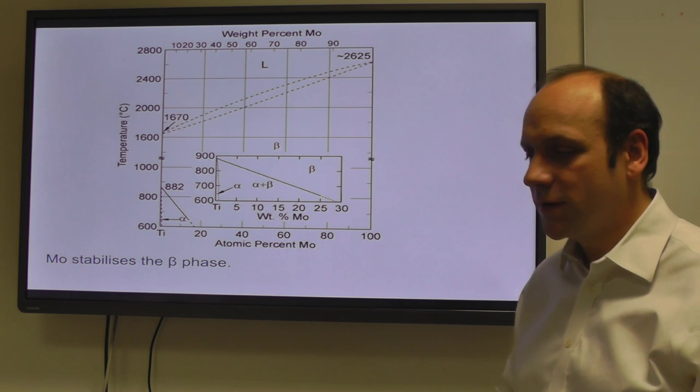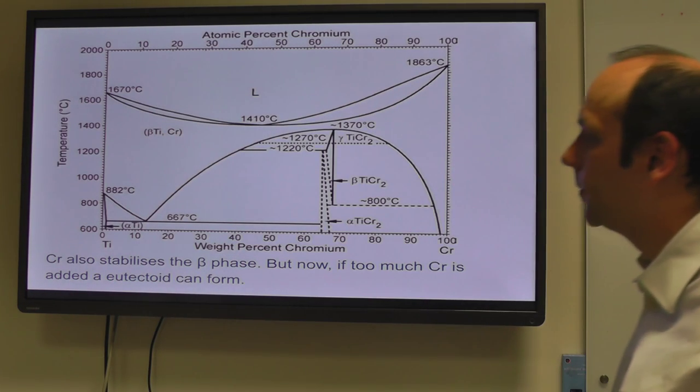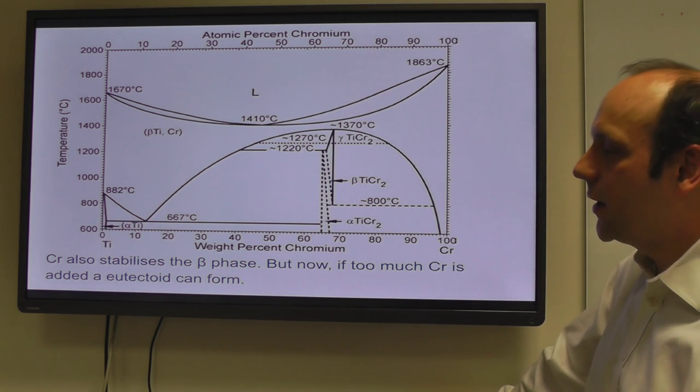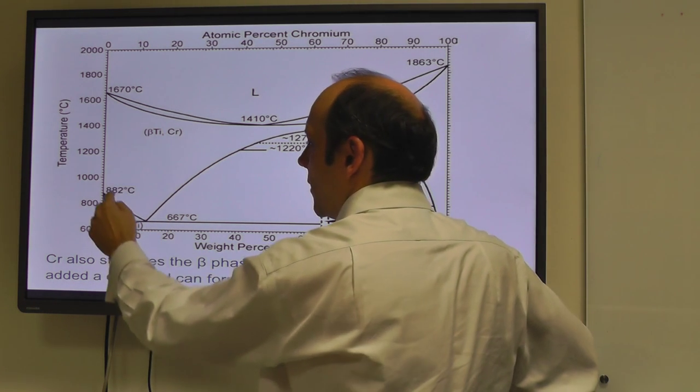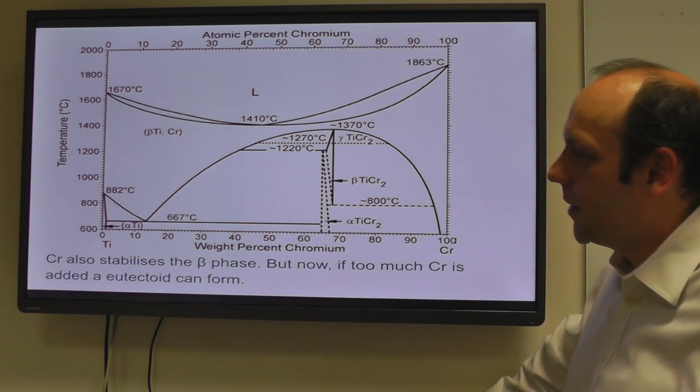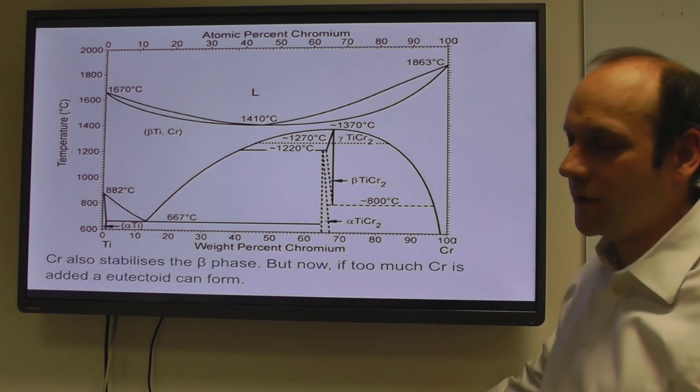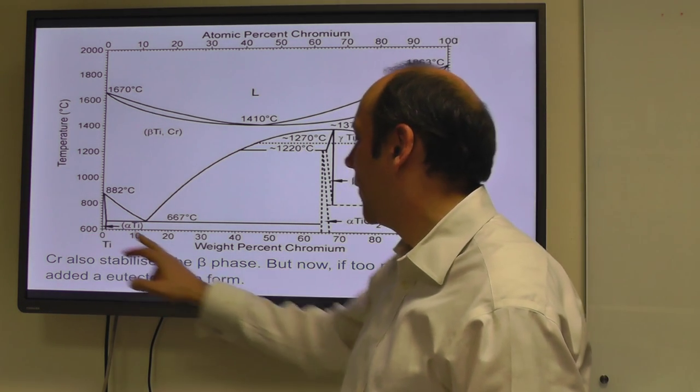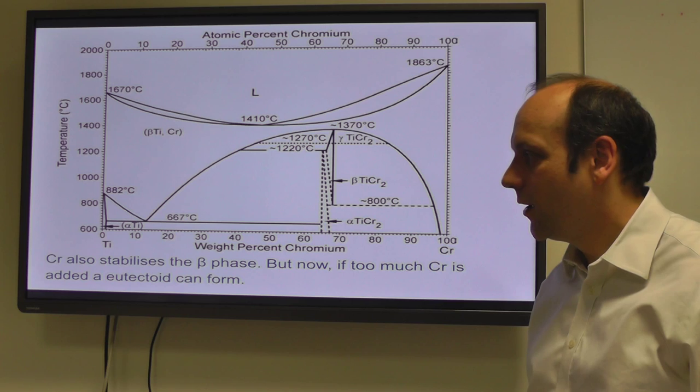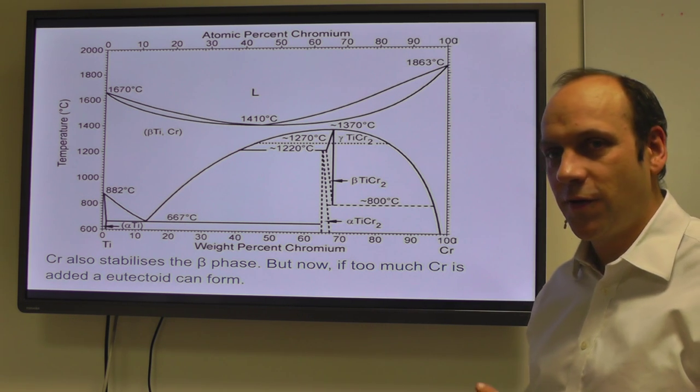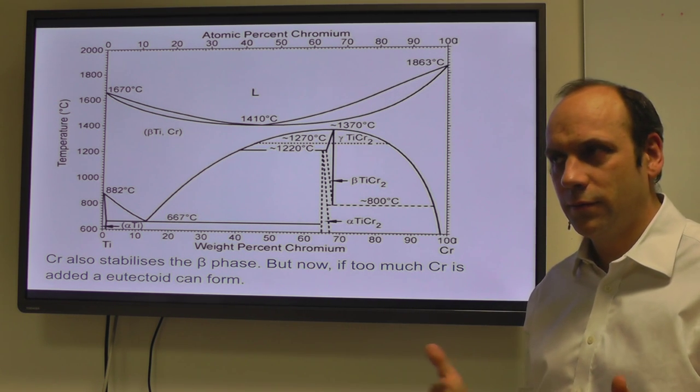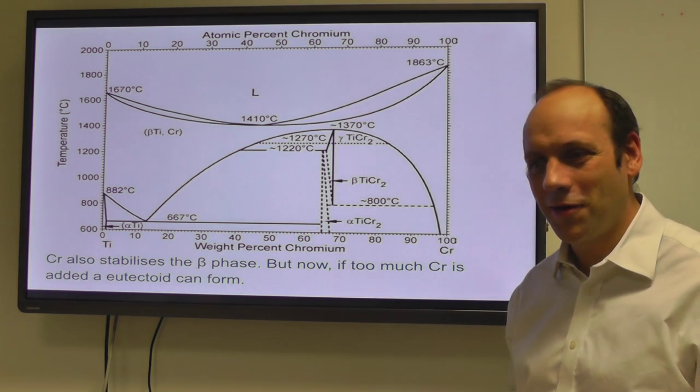Here's a eutectoid element, chromium. Chromium again has not much solubility in alpha titanium. It stabilizes the beta phase, that is it lowers the solvus temperature, and there's a eutectoid here. So if you end up having, you know, 2% amounts of chromium, you might end up with an alpha plus titanium-chromium TiCr2 microstructure, which would probably be quite undesirable. So we tend to prefer the isomorphous stabilizers, particularly molybdenum, over things like chromium, although there are some other things about chromium that are interesting.